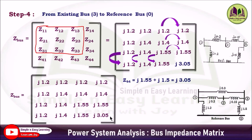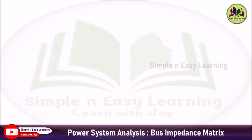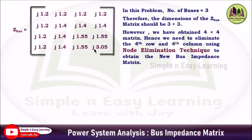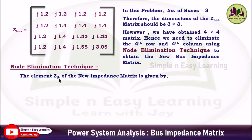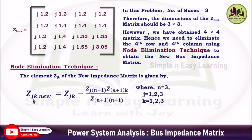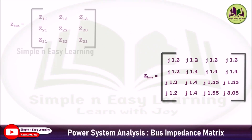Observing this matrix, it is 4×4 but the problem has only three buses, so the final answer must be 3×3. We need to reduce this 4×4 matrix to 3×3 by applying the node elimination technique — eliminating the fourth row and fourth column. The formula is: Z_jk(new) = Z_jk − (Z_{j,n+1} × Z_{n+1,k}) / Z_{n+1,n+1}, where n = 3, and j and k each vary from 1 to 3.